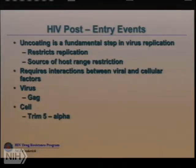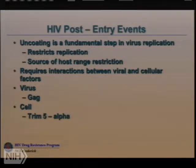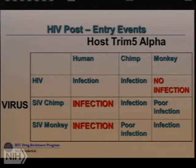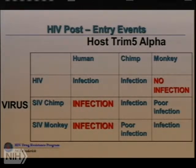This is a series of steps that requires the virus GAG protein — the structural core protein — and the cell's TRIM-5-alpha, which normally restricts virus uncoating but in the case of HIV is unable to do so. If you take the TRIM-5-alpha gene product from humans, chimps, and monkeys, there are circumstances where monkeys can restrict HIV but humans cannot. HIV can't infect monkeys because their TRIM-5-alpha is different enough to exclude the virus based exclusively on uncoating.